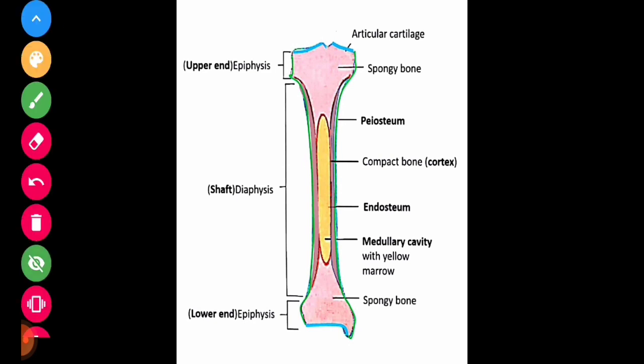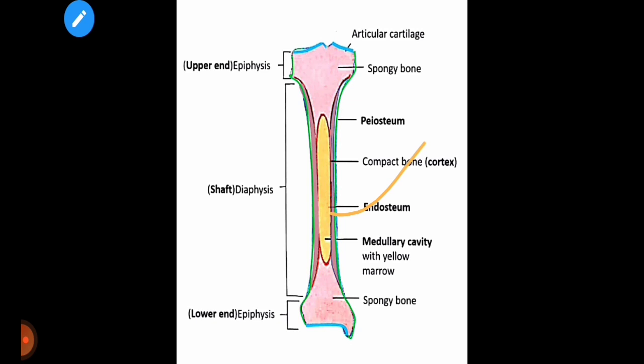Endosteum: inside the medullary cavity of the diaphysis, a membranous layer is present called the endosteum. The endosteum is responsible for bone growth, repair, and remodeling, because osteoblasts, osteoclasts, and osteocytes are present here. Periosteum: the outer surface of the bone is covered with a fibrous membrane called the periosteum, which contains blood vessels, nerves, lymphatic vessels, tendons, and ligaments.